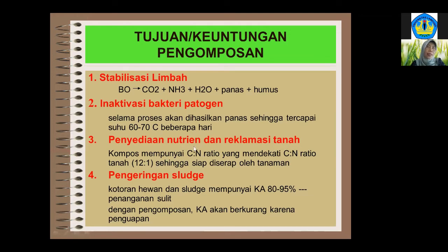Kalau media komposnya tadi kulit kopi dengan C/N sekitar 70an, maka harus dicampur dengan limbah-limbah yang C/N-nya rendah seperti kotoran ternak, sehingga optimalnya C/N rasio 30-40. Setelah proses pengomposan maka akan turun, paling tidak di bawah 20 sudah masuk ke SNI kompos yang bagus, syukur-syukur mendekati C/N tanah yaitu 12:1. Karena C/N sudah rendah dan senyawa-senyawanya sudah stabil, sudah terurai menjadi bentuk sederhana, maka mudah diserap oleh tanaman.